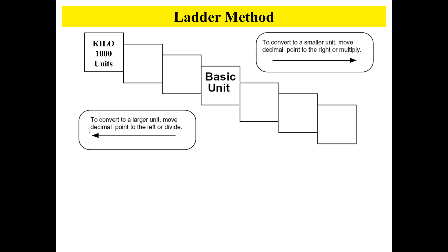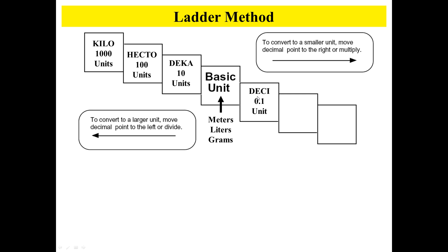We're going to move on to talk about the units. Kilo — 1,000 units. Hecto — 100 units. Deka — 10 units. Deci — 0.1 units. Centi — 0.01 units. Milli — 0.001 units.